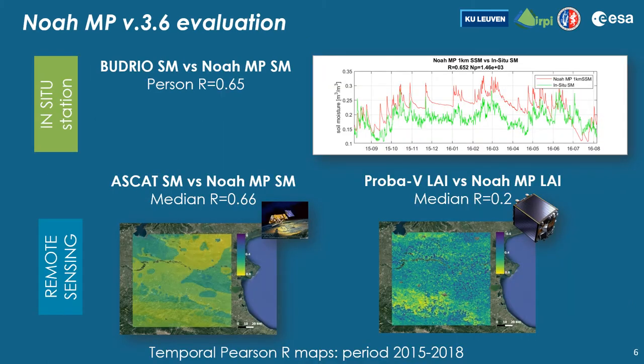First runs were evaluated through comparisons with in-situ and remote sensing soil moisture and leaf area index observations. Results show acceptable agreements, but there is room for improvement by updating both soil moisture and vegetation.